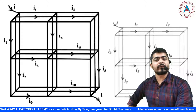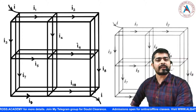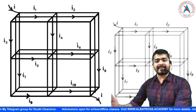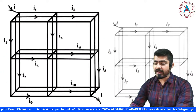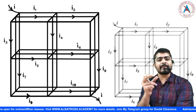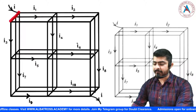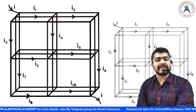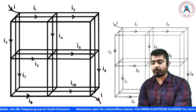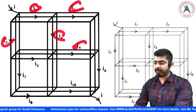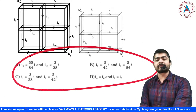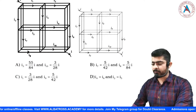Hello everyone, here's a good question from the chapter on electricity based on a cubical grid of resistors. This question was asked by a student on my Telegram group. Let's first understand the question: we have a cubical grid where each segment or section has the same resistance. Current I is entering from one corner of the cube and leaving from the opposite corner. We have to find the values of the various currents mentioned, and this is a multiple-correct question.